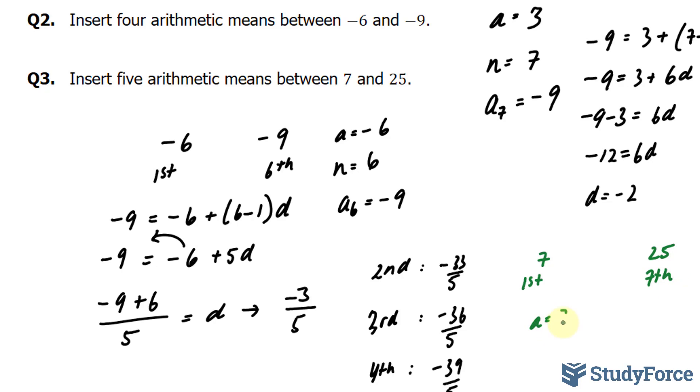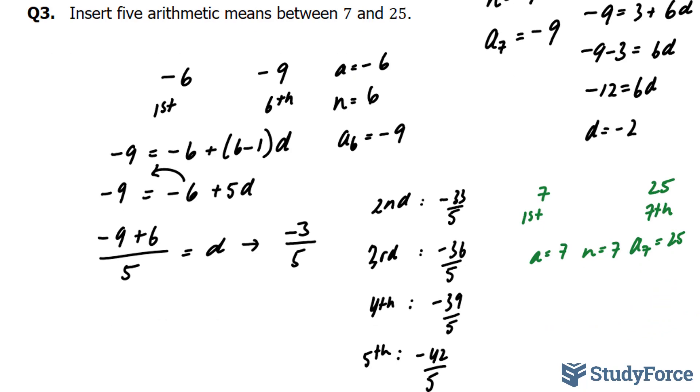This means our a value is 7, our n value is 7, and a at 7 is 25. Let's use the formula once again. A at 7 is 25 equals 7 plus 7 minus 1 times d, therefore giving us d equal to 3. Wonderful.